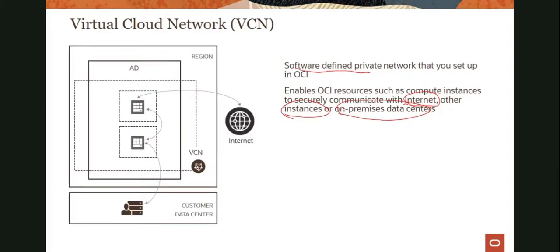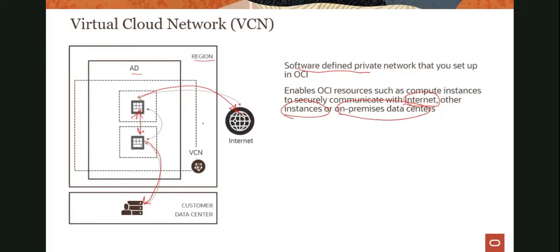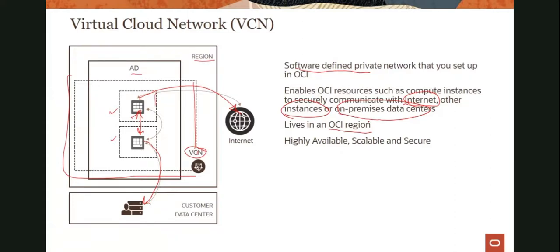So what does the virtual cloud network look like? As you can see here, I have a couple of instances — one instance is talking to the Internet, and the other instance is talking to your on-premises environment. In order to enable that communication, we take a region. A region has one or multiple ADs. We create this VCN, and the reason we show it as a dotted line is to show this is a logical, software-defined construct. We have compute instances running inside the VCN. A VCN lives within an OCI region and it's highly available, secure, and scalable — all done in software.